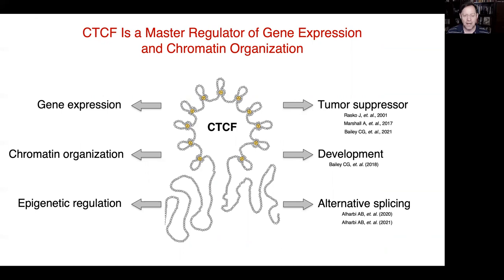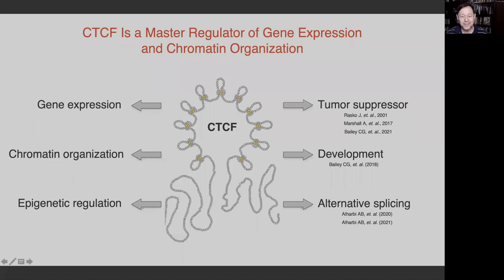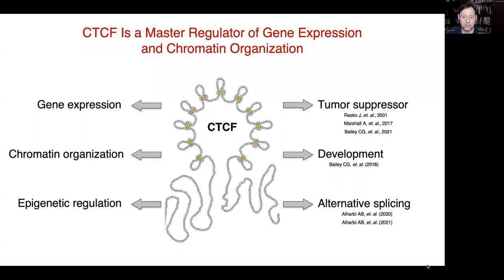Now I want to switch gears and introduce a new player in the alternative splicing arena: a gene we have studied for many years called CTCF. CTCF is a ubiquitously expressed protein involved in embryogenesis, and is particularly known as a master weaver of the genome — acting together with cohesin at the basis of topologically associated domains in chromatin organization. For decades, CTCF has been recognized as fundamentally involved in gene expression — both activation and repression — and epigenetic regulation through differential methylation binding. We have publications involving tumor suppression via CTCF, development via CTCF, and most recently alternative splicing modulated by CTCF.